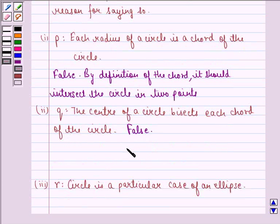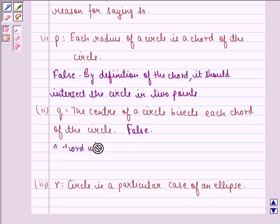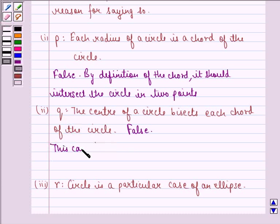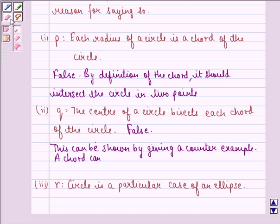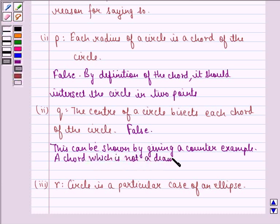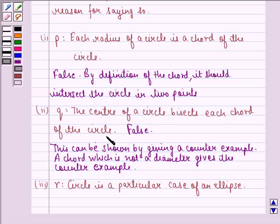Now, this can be shown by giving a counter example. A chord which is not a diameter gives the counter example. So we see that the center of a circle does not bisect each chord of the circle.